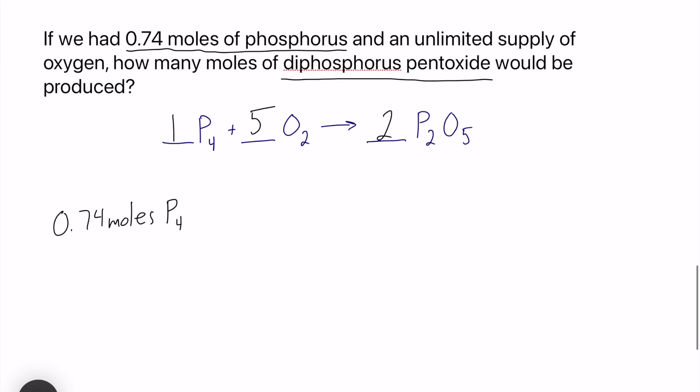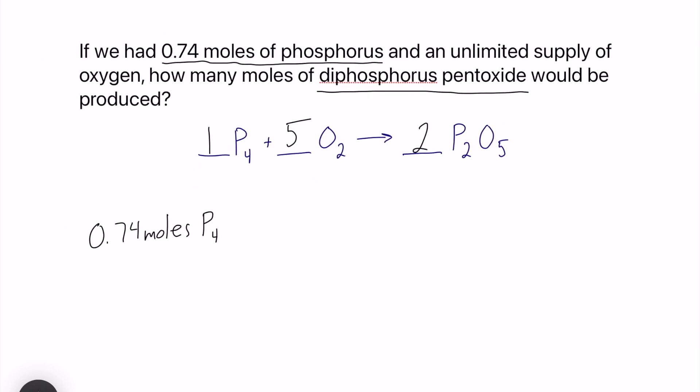We have written down what we know. We're given 0.74 moles of P4. I'm going to use a time sign line. What I want on top is what I want from the question. So I want moles of diphosphorus pentoxide. From my balance formula, I am going to put 2 moles of P2O5. And on the bottom, I am putting what I'm getting rid of, which is 1 mole of P4.